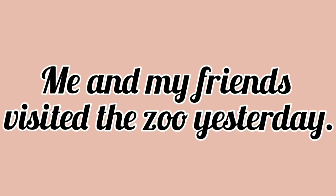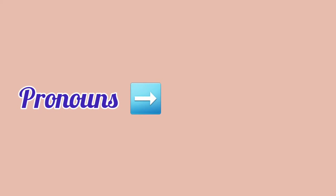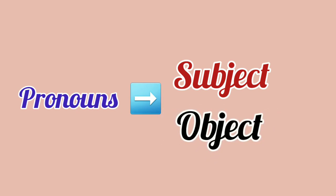Now, if we have a sentence like this: 'Me and my friends visited a zoo yesterday.' What's the subject here? Me and my friends. So I have used the pronoun 'me' there. What do you mean by pronoun? A pronoun is a word that can replace a noun, and pronouns can come in the place of subject and also in the place of object.